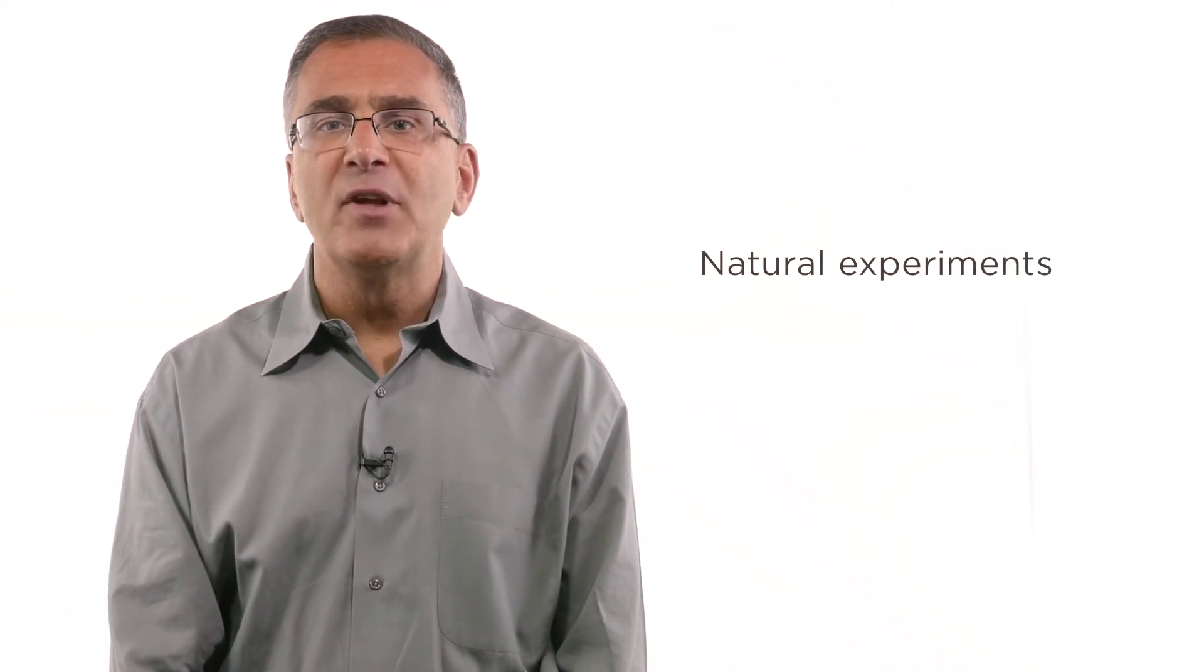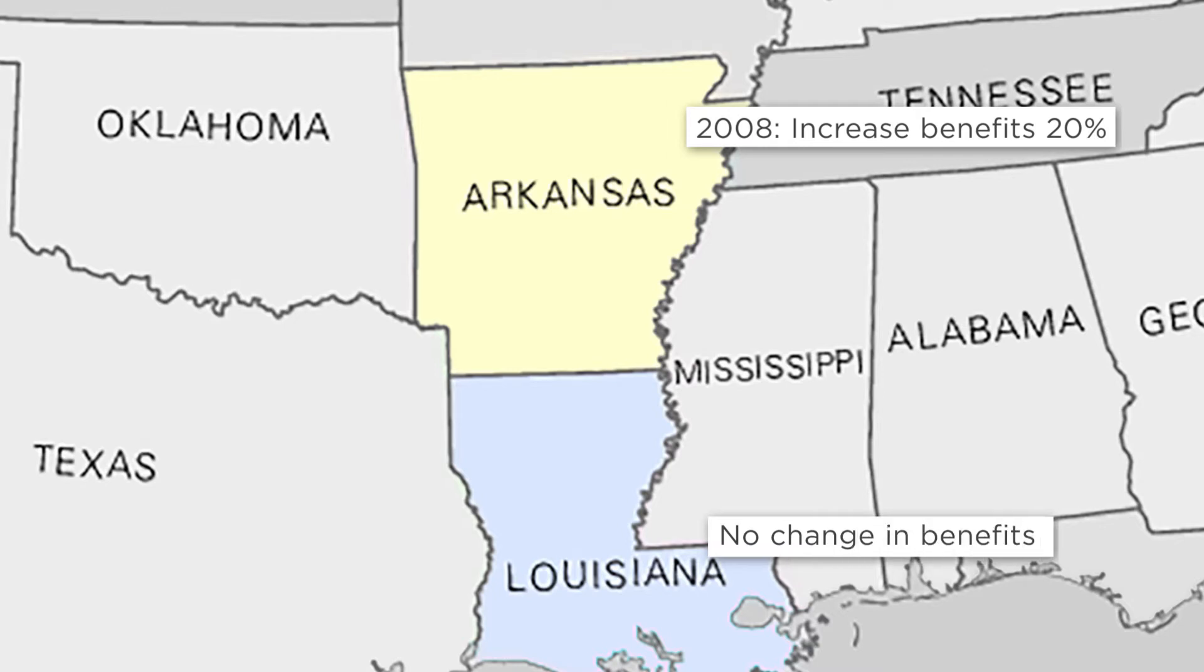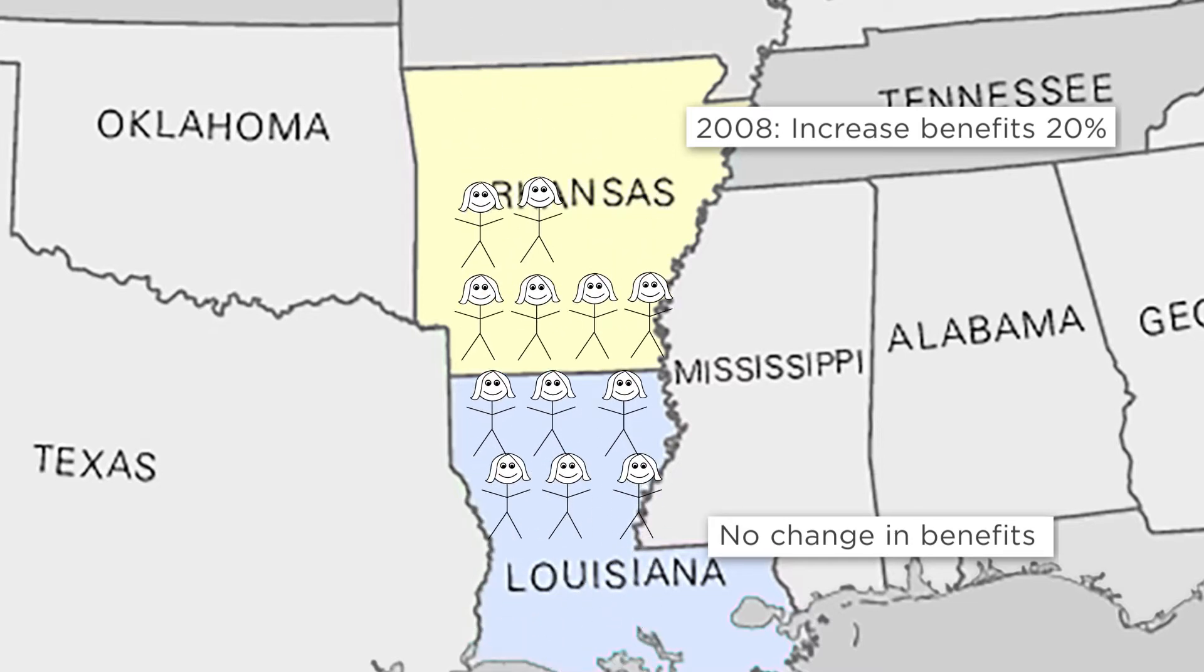Suppose, for example, that we have a large sample of single mothers in the neighboring states of Arkansas and Louisiana. Suppose also that in 2008, the state of Arkansas raised the benefits it gave those mothers by 20% while Louisiana kept its benefits unchanged. In principle, this alteration in Arkansas policy has essentially performed our randomization for us. The women in Arkansas who experienced the increase in benefits are the treatment group. And the women in Louisiana whose benefits did not change are the control group.